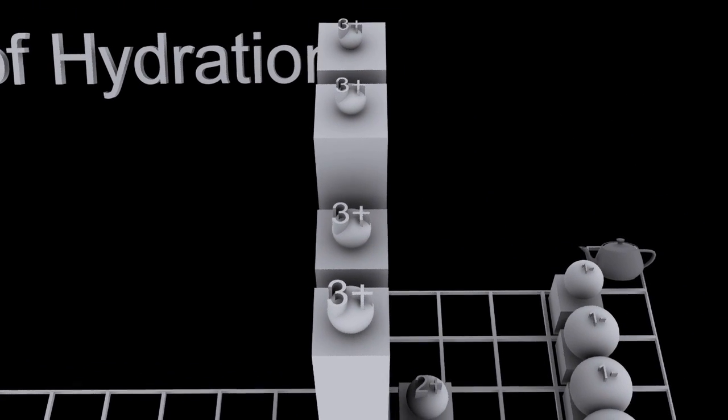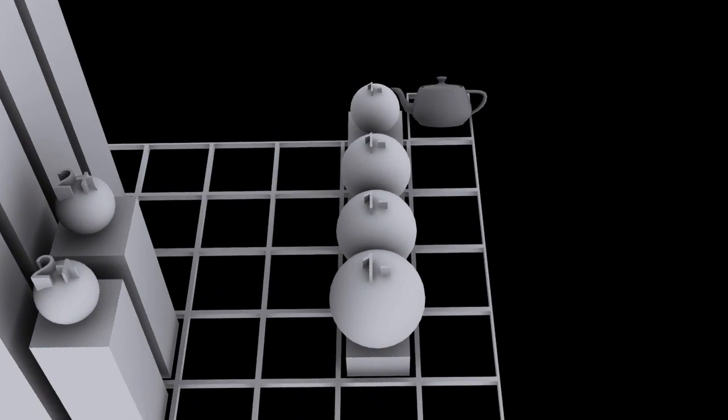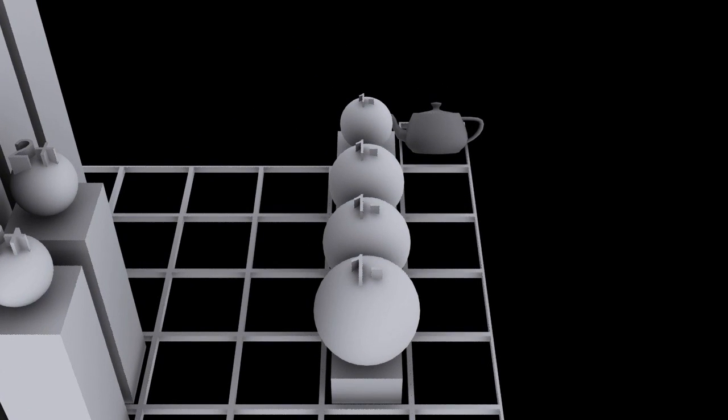On the other hand, the biggest ion with the lowest absolute charge has a low charge density. It's not going to be very attractive to the water molecules. Any bonds it forms are going to be quite weak and not going to release much energy.